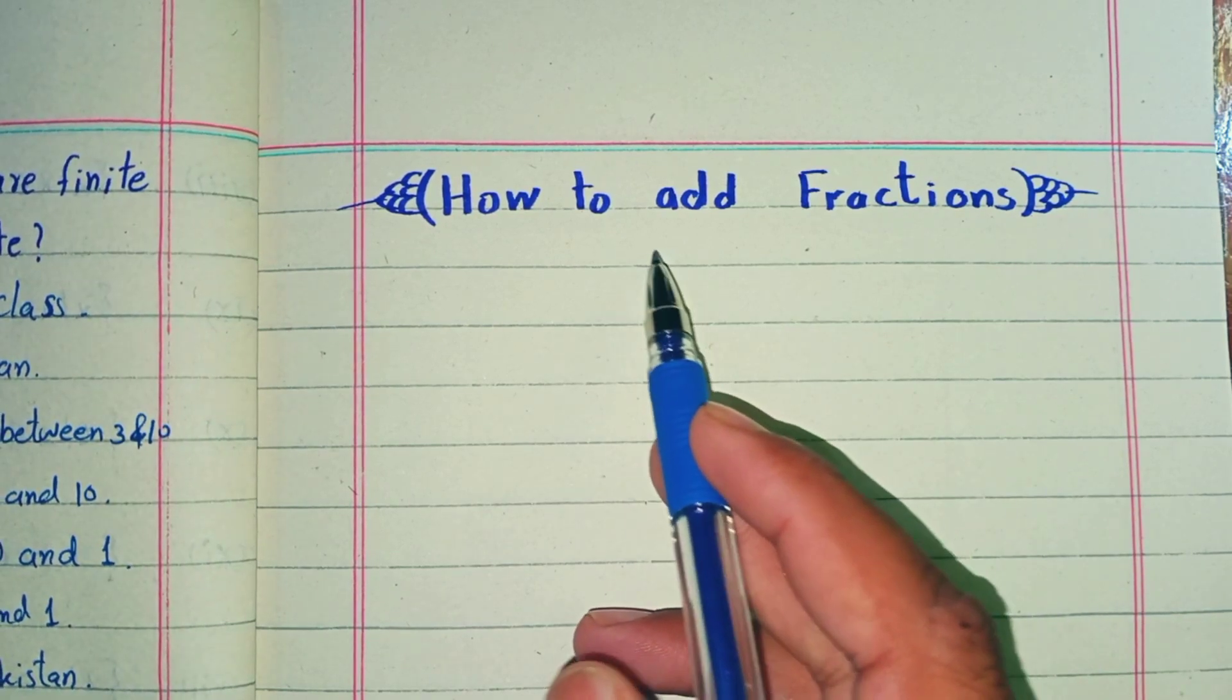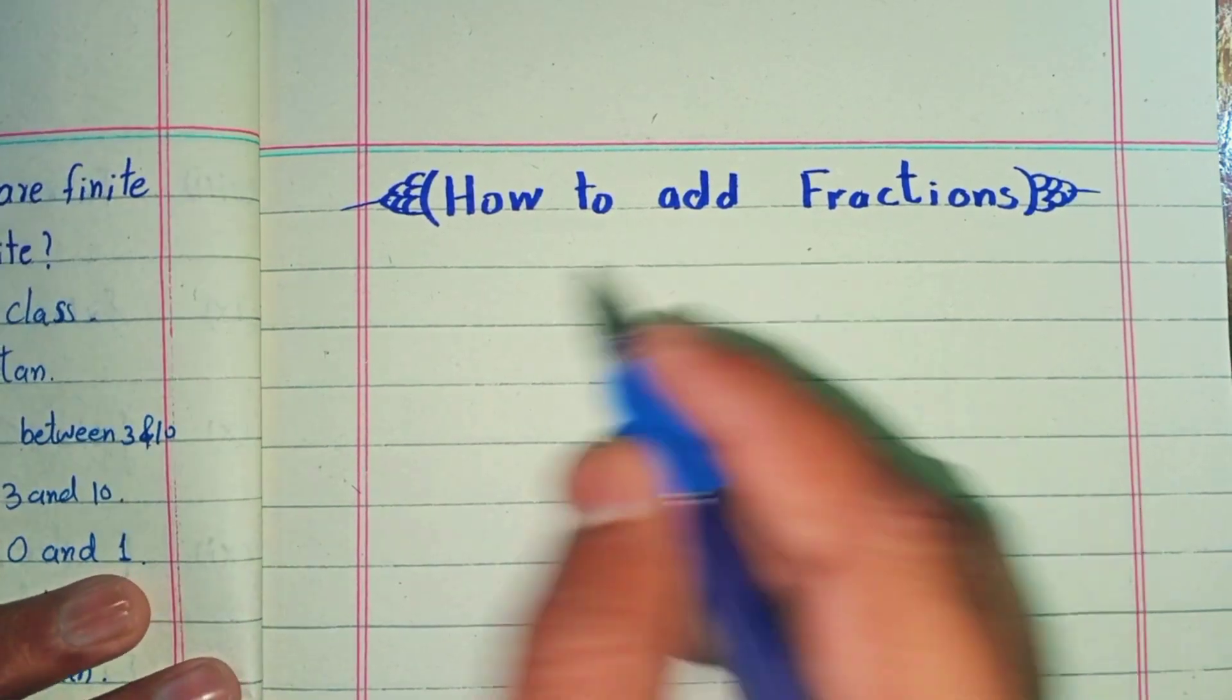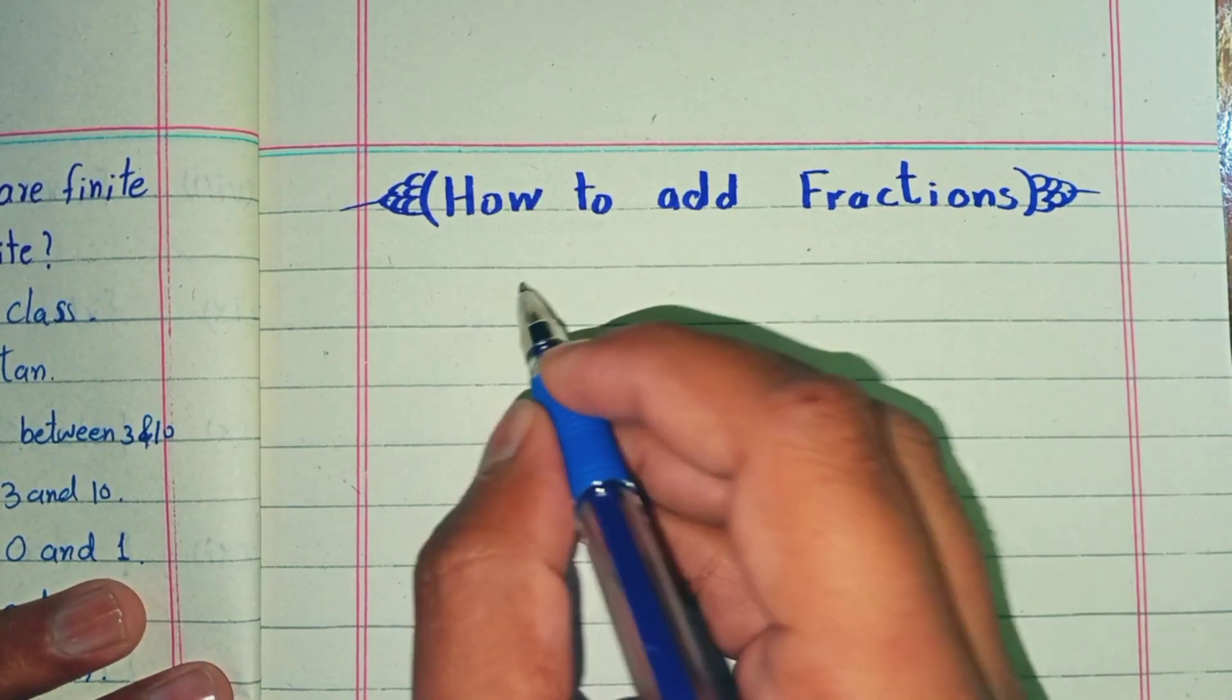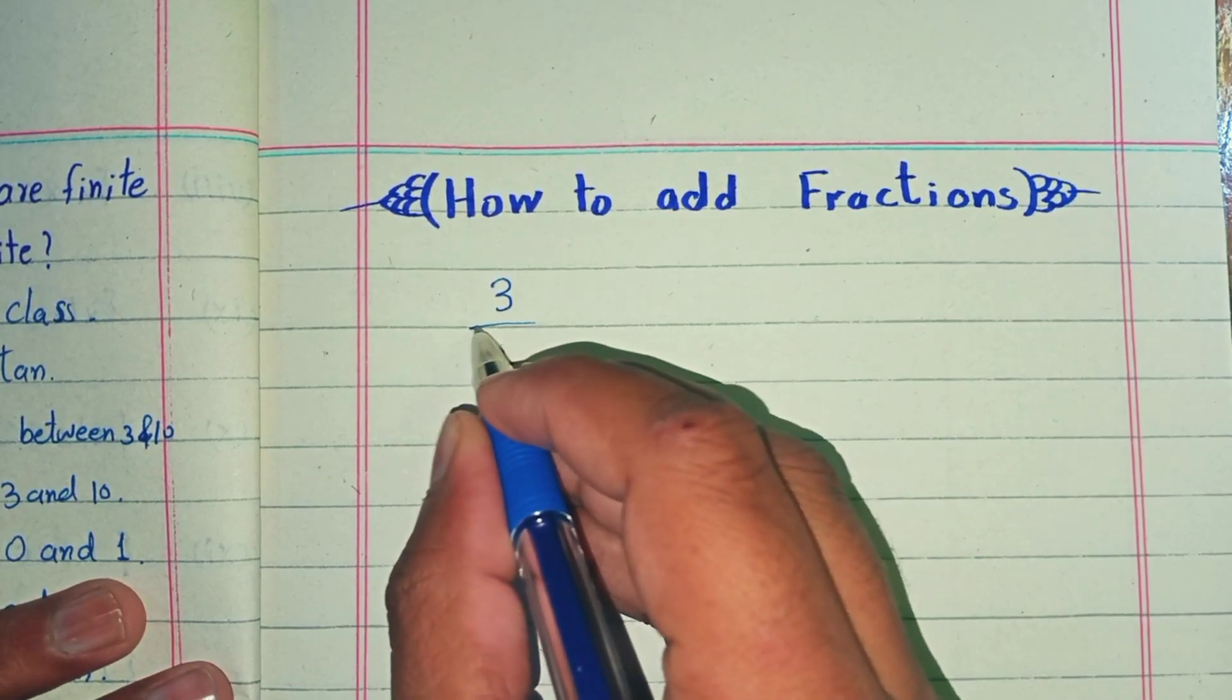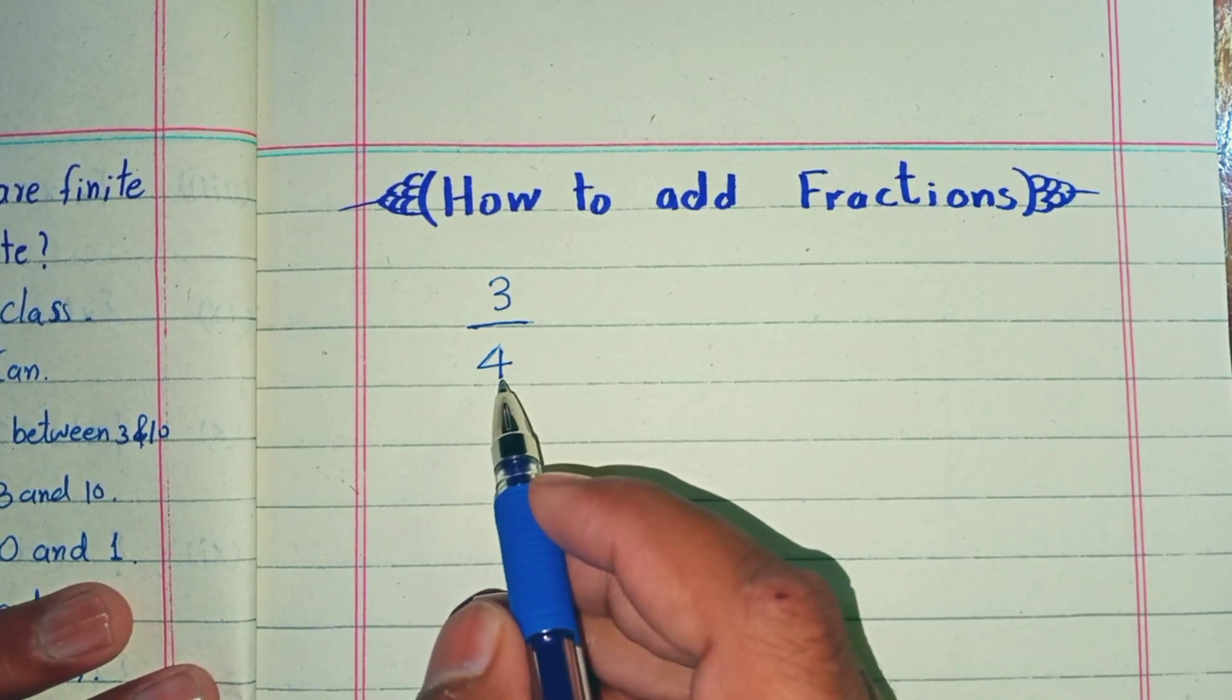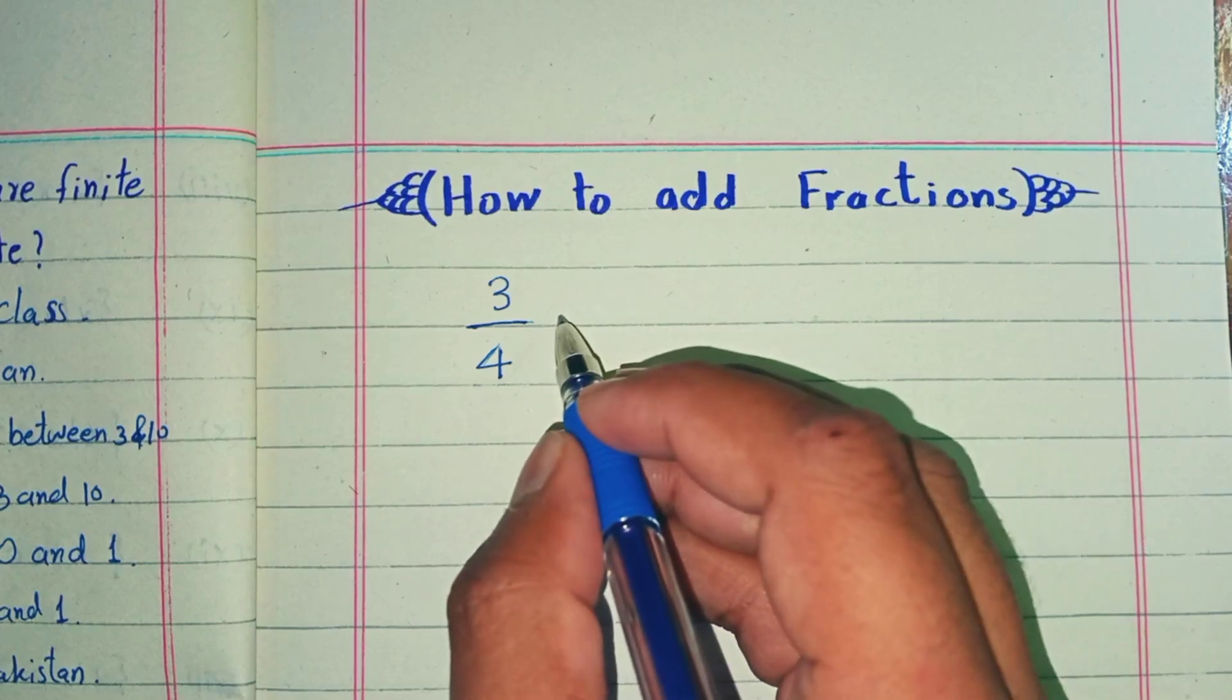There are a few cases about adding fractions. First, what is a fraction? A fraction is part of a whole where we have two numbers and one bar. The number above the bar is called the numerator and the number below the bar is called the denominator. The first case is adding two fractions with the same denominator.